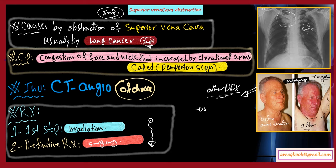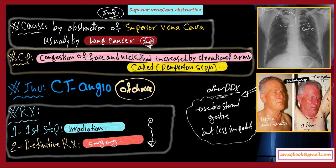Other differential diagnoses for Pemberton's sign include retrosternal goiter, in which the patient also suffers from congestion of the face with elevation of the arms. However, in the AMC exam, superior vena cava obstruction is very important — whenever you see a picture like this, it represents superior vena cava obstruction, not retrosternal goiter. For the full course, please contact us at amcqbook@gmail.com. Thanks and goodbye.